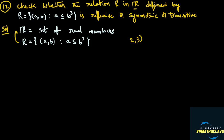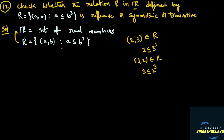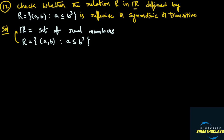For example, take the ordered pair (2, 3). Is (2, 3) in the relation? We check if 2 is less than or equal to 3 cube. 3 cube is 27, and 2 is less than 27 — yes. So the ordered pair (2, 3) is in the relation. Now, is the ordered pair (3, 2) in the relation? We check if 3 is less than or equal to 2 cube. 2 cube is 8, and 3 is less than 8 — yes. So (3, 2) does belong to the relation. Now we try to understand what type of ordered pairs are in the given relation.